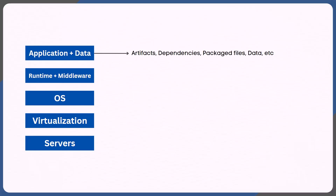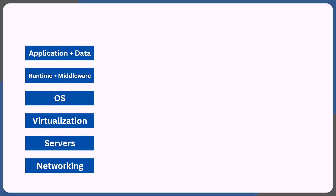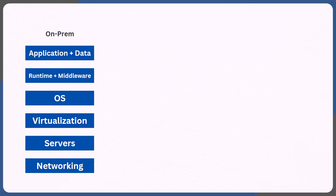But what's the point of having a server with your application hosted when it cannot communicate with the outside world? That's where networking comes into picture. Here we have routers, switches, local area network, virtual private network, internet connectivity, etc. Essentially, you're going to do all the networking so that your server can communicate with the outside world and the outside world can send requests to your server. So this is the case with on-premise infrastructure.